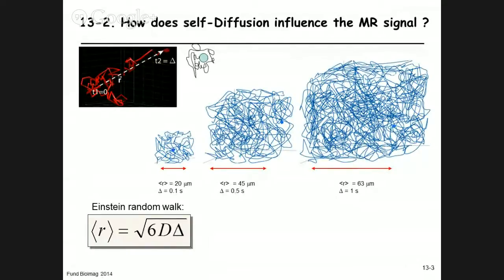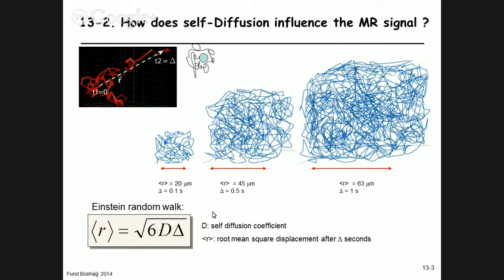Diffusion would be an easy way to characterize molecule types in vivo. Temperature also influences diffusion — using MR measurements one can actually measure the temperature of a sample from the diffusion behavior of water. The experimental parameter is time delta; D is the self-diffusion coefficient. The question now is: how does this random walk affect the MR signal, and particularly the phase? Coherent motion like blood flow produces a detectable phase shift — what about incoherent motion such as diffusion?